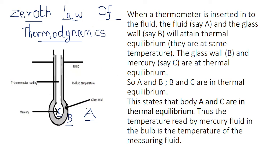When a thermometer is inserted into the fluid, the fluid A and the glass wall B will attain thermal equilibrium — both will reach the same temperature, and until then heat will flow from A to B. Then from B to C, the heat will flow from the bulb to the mercury C. So the glass wall B and the mercury C will also attain the same temperature — thermal equilibrium.